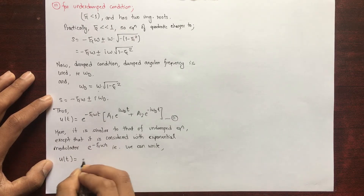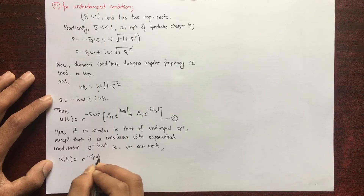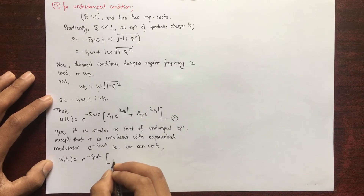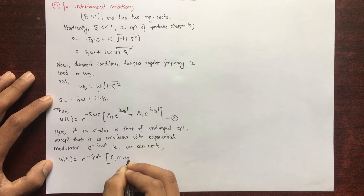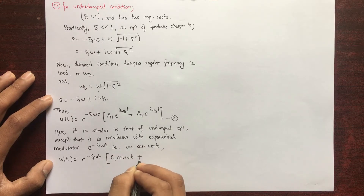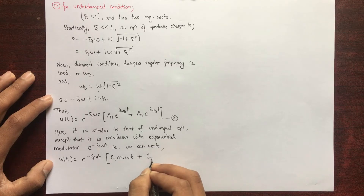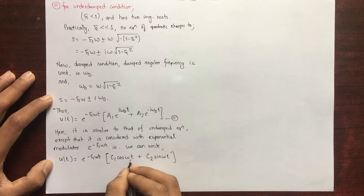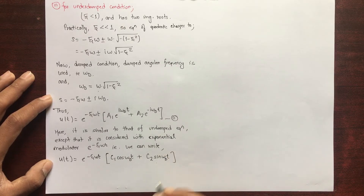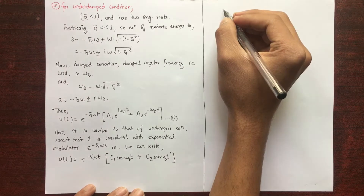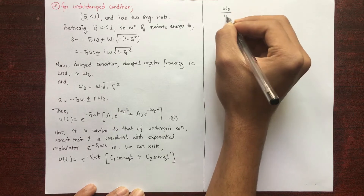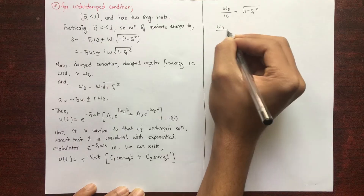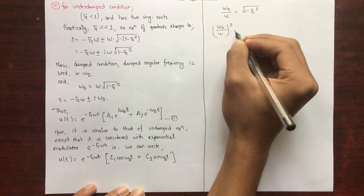So substituting, u(t) = e^(−ξωt) — the exponential modulator — times [C₁·cos(ω_d·t) + C₂·sin(ω_d·t)]. This uses the damped frequency ω_d. Note that ω_d / ω = √(1 − ξ²), using the relation I just depicted.